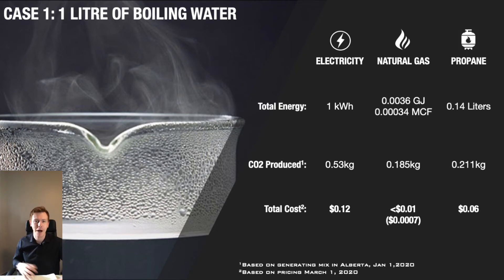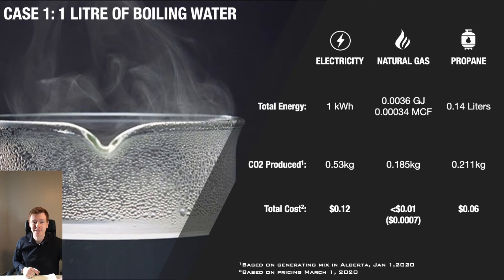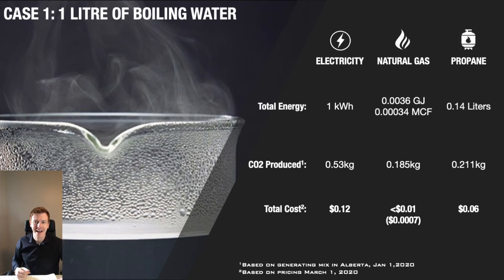Now let's look at propane. How many people have gone camping and used propane to heat their food or water over a camping stove? Though it seems cost effective, in reality propane is just as bad as electricity — in fact it produces a lot more CO2, and it's somewhere in the range of 6 to 7 cents to do the same activity that natural gas would have cost 0.7 cents. Again, it's an order of magnitude higher compared to natural gas.